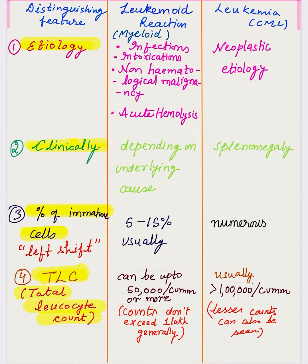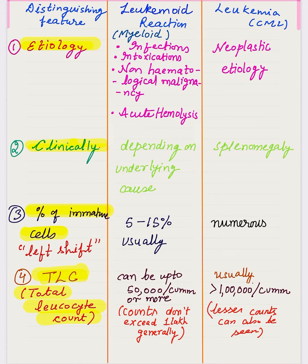Clinically, in CML there is characteristic splenomegaly, and the patient presents with abdominal heaviness or dragging pain in the region of the spleen. In leukemoid reaction, the clinical presentation will depend on the underlying cause.